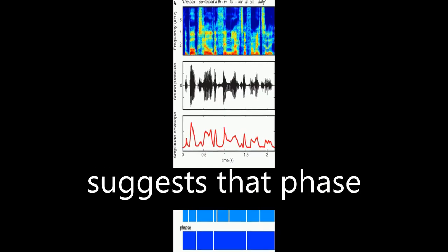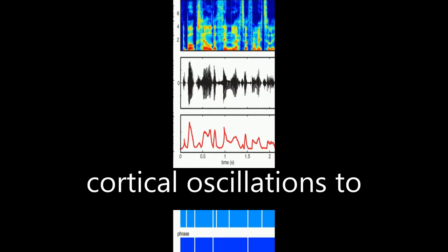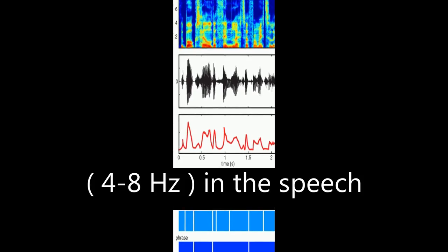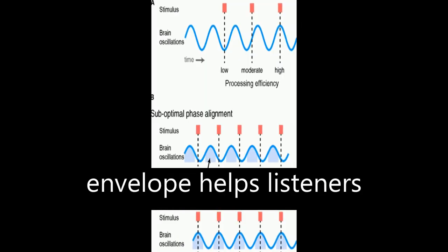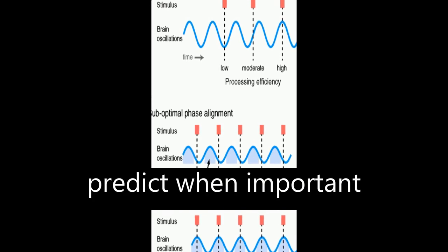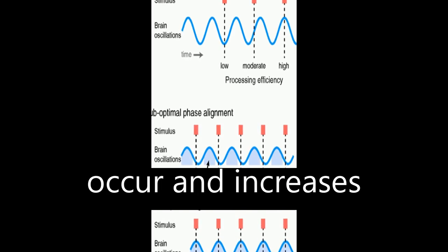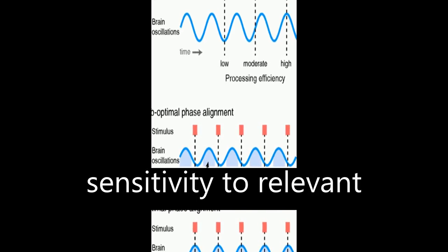Neuroimaging data suggests that phase locking by ongoing cortical oscillations to low-frequency information, 4 to 8 Hz, in the speech envelope helps listeners predict when important events are likely to occur and increases sensitivity to relevant acoustic cues.